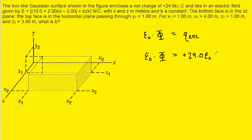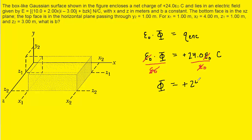The unit of that charge is Coulombs. Now if we study the equation carefully, we can see that epsilon appears on both sides. So if we divide both sides of the equation by epsilon, it's going to cancel out. And that's going to tell us that the total electric flux is going to equal positive 24.